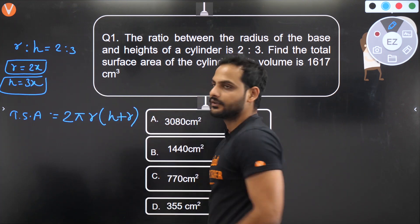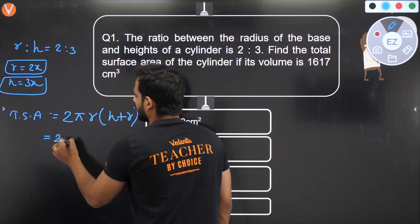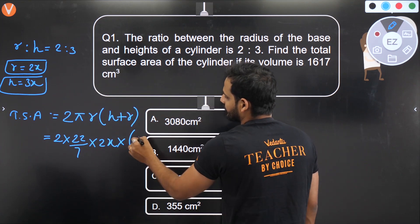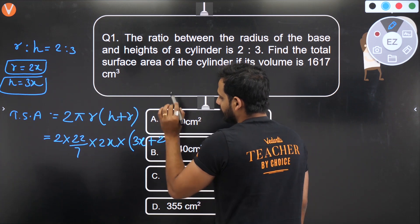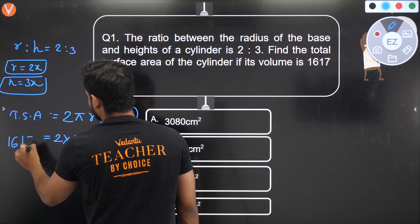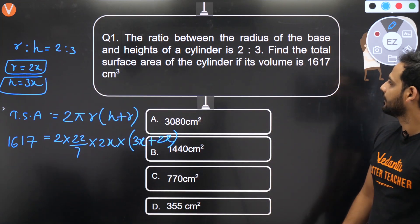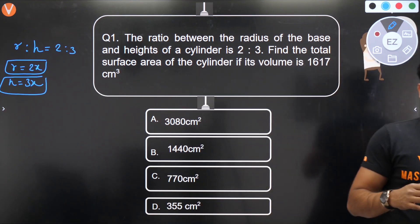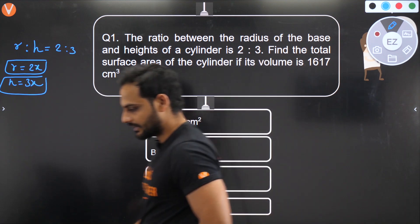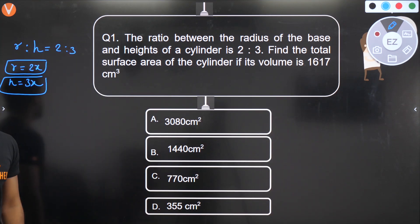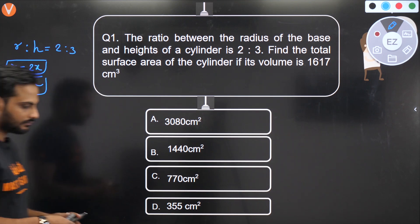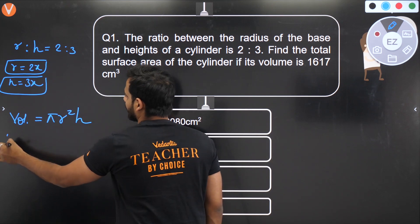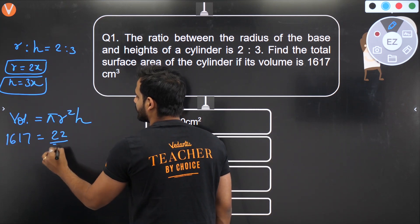Let's put these values in. So: 2 × (22/7) × 2x × (3x + 2x) = TSA. But wait — they've given the volume as 1617 cm³, not the TSA directly. So we first use the volume formula: Volume = πr²h. So 1617 = (22/7) × (2x)² × (3x), which gives us 1617 = (22/7) × 4x² × 3x = (22/7) × 12x³.